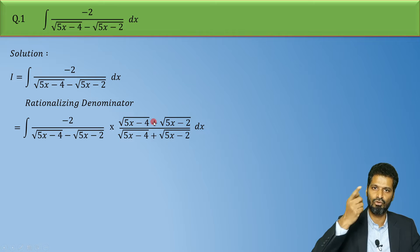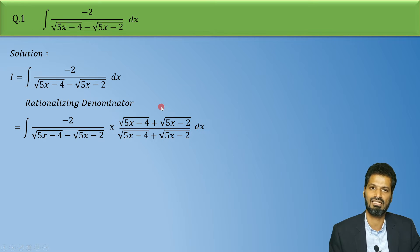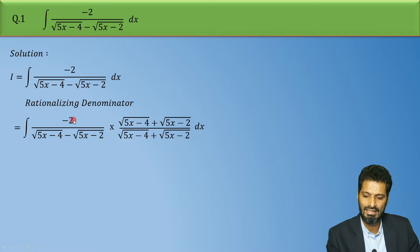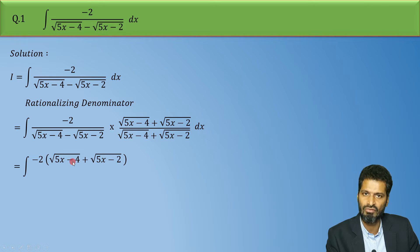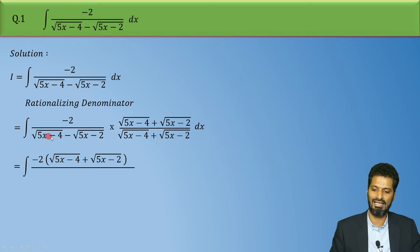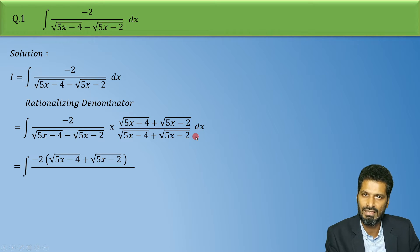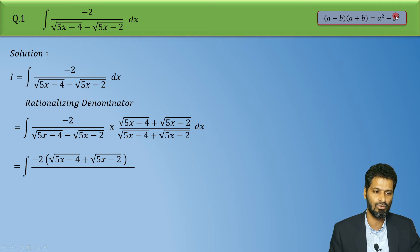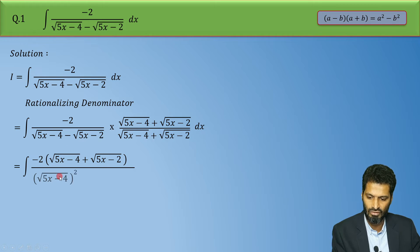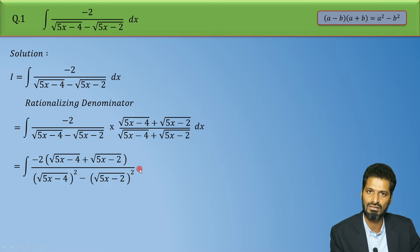So we have rationalized by multiplying both numerator and denominator with the conjugate. In the next step, the numerator is minus 2 multiplied by root of (5x minus 4) plus root of (5x minus 2), and in the denominator we have (a minus b) into (a plus b), which equals a squared minus b squared. So applying this formula here, the denominator becomes: root of (5x minus 4) whole squared, minus root of (5x minus 2) whole squared.